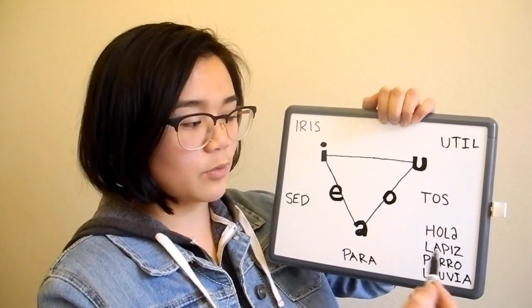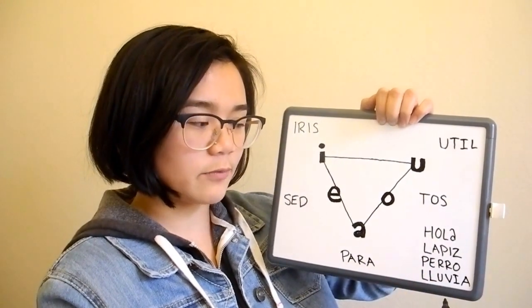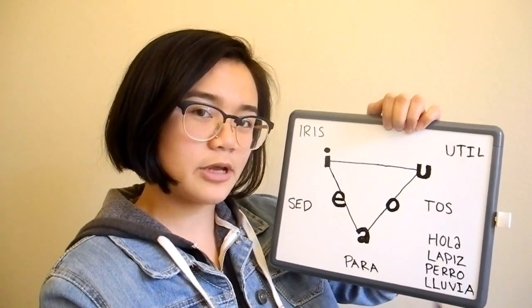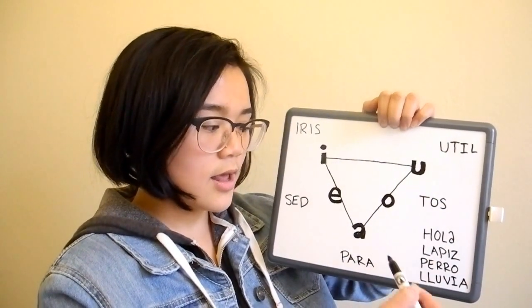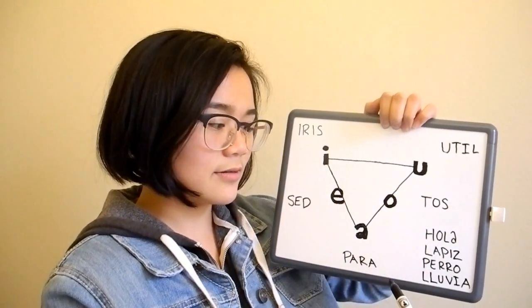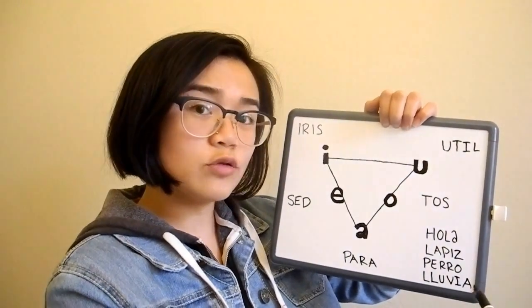Let's go through some examples where you have two or more vowels in the same word, so you can see the difference and the movement in your tongue. Hola. Hola. Lapiz. Perro. And lluvia.